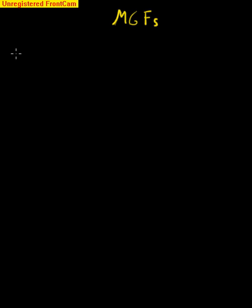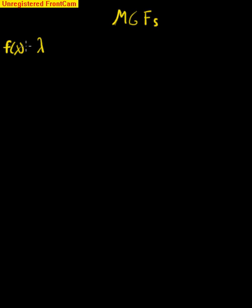Let's recall that we aren't explicitly told, for that problem, that we're dealing with an exponential distribution, but any memorization of moment generating functions and their properties is going to quickly reveal that. So let's look at how to derive the moment generating function for exponential random variables with parameter lambda. Recall that our PDF for an exponential distribution is the following, and we'll put the domain here because that becomes important in deriving our moment generating function.